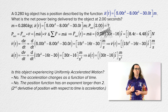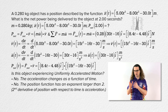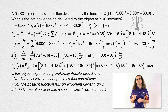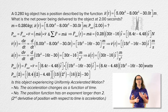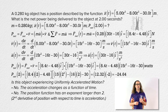We know power equals the dot product of force and velocity, so net power equals the dot product of net force and velocity — the dot product of the two equations Bobby just solved for. Because both are in the î direction, it works out to be (8.4t − 4.48) times (15t² − 16t − 30) watts. Substituting 2 seconds in for time, the first parenthetical gives 12.32 and the second gives negative 2. Multiplied together, we get negative 24.64, which with 3 sig figs is negative 24.6 watts.